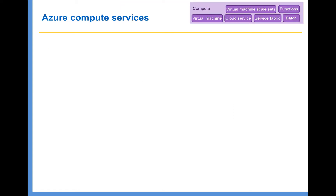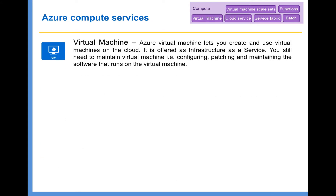And finally, Azure Compute Services. In Azure Compute Services, we have Virtual Machines. Azure Virtual Machine lets you create and use virtual machines on the cloud — it is basically infrastructure as a service. One thing to remember with infrastructure as a service is that you need to maintain the virtual machine; the configuration, patching, and maintaining the software that runs on the virtual machine is your responsibility. Using Azure Virtual Machines, you can create Windows or Linux virtual machines.